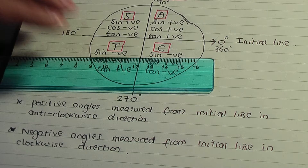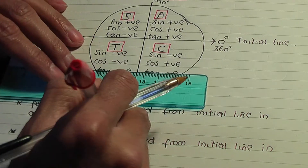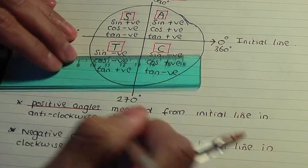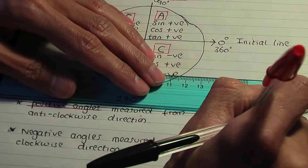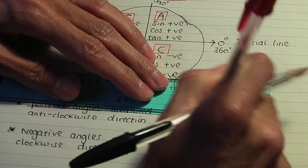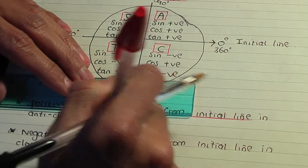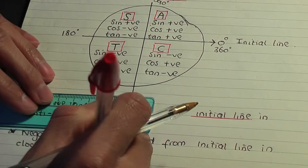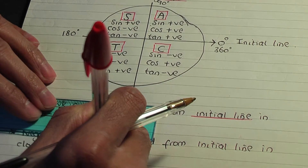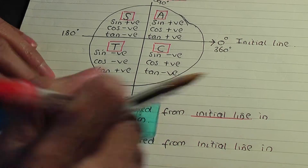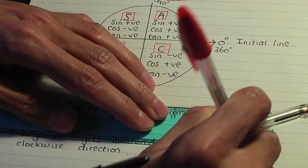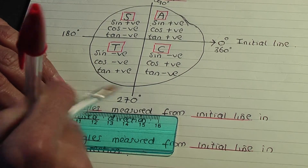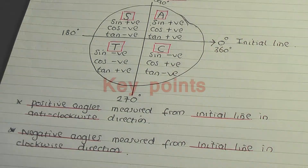These things are important: positive angles, you measure from the initial line in the anti-clockwise direction; negative angles, however, are measured from the initial line in the clockwise direction.